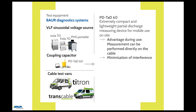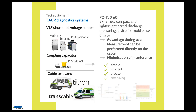The PDTAT60 represents the most compact and lightweight partial discharge measuring device for mobile use on site. This portability makes it possible to perform the measurement directly on the cable, which minimizes interference and thus represents an important precondition for precise and meaningful measurement results. Checking cable routes with the PDTAT60 is simple, efficient, and precise. It also saves time because the dissipation factor measurement and partial discharge testing are performed in parallel. A comprehensive checking of newly laid or repaired cables, as well as general condition evaluation, can therefore be performed quickly and simply in a single operation, without significant extra expense.